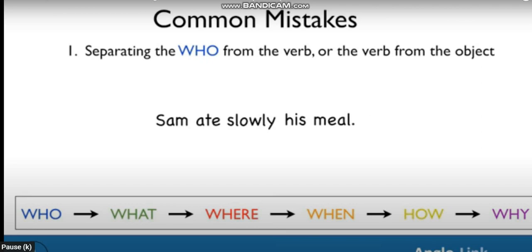This time, an element, how, has separated the verb from its object. Look at them in colors. Sam ate slowly his meal.